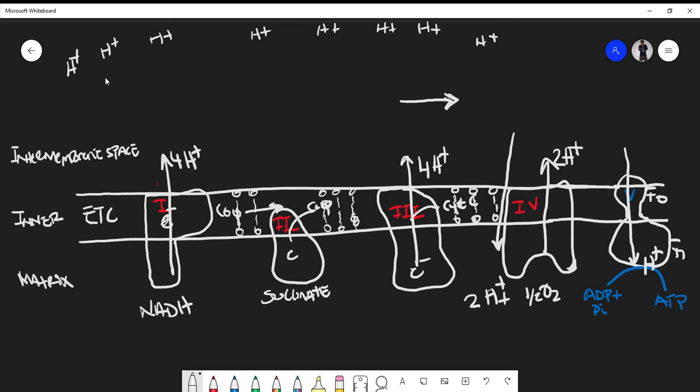Eventually these H+ ions are going to come to Complex V, also called ATP synthase, and we're going to use the proton gradient to drive the phosphorylation of ADP to ATP. That is the whole concept behind pushing H+ ions into the intermembrane space.